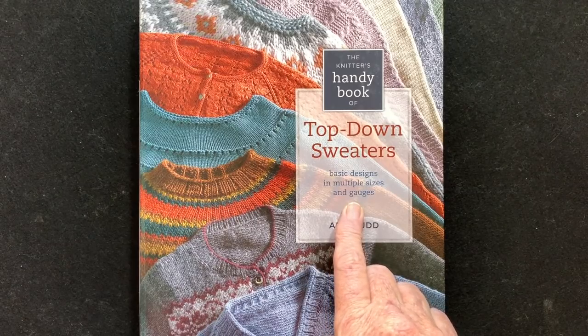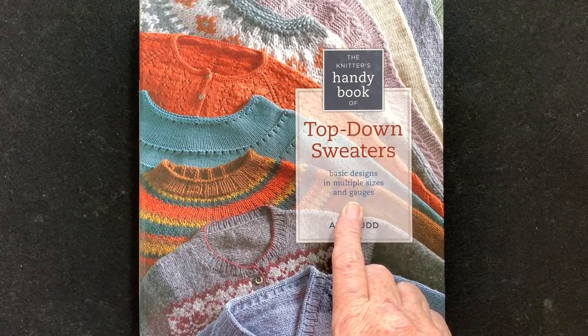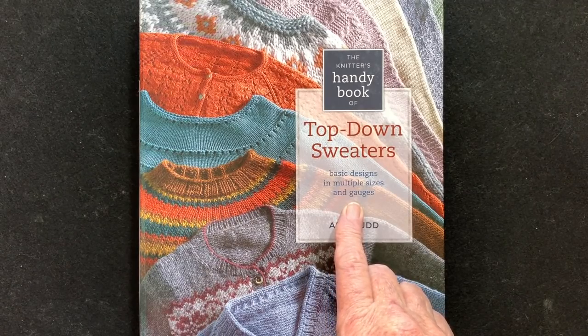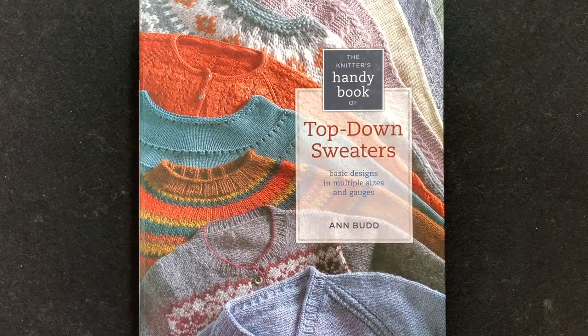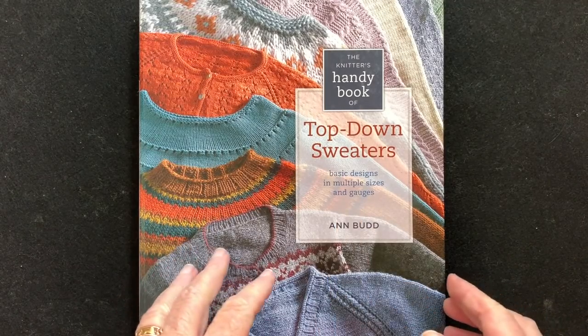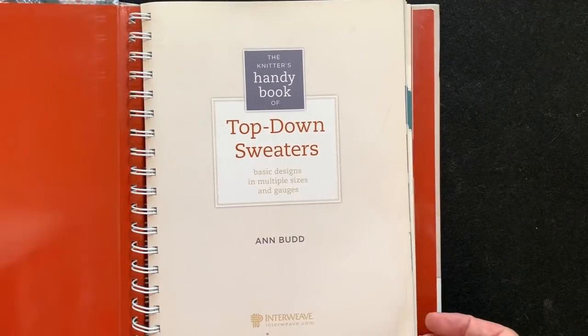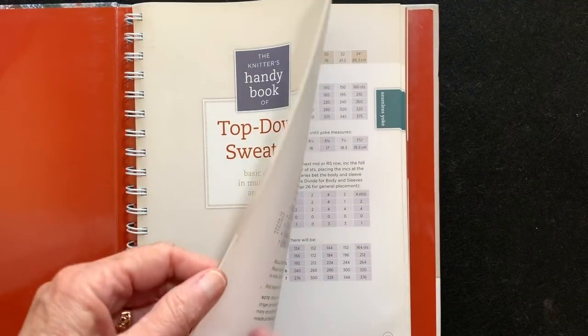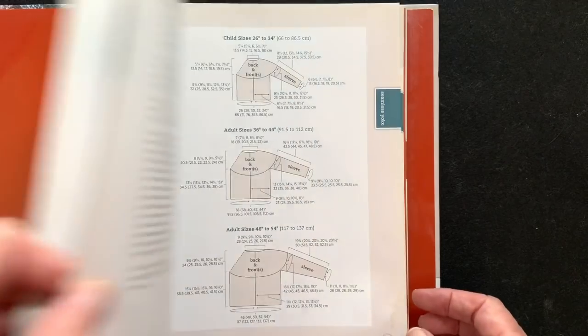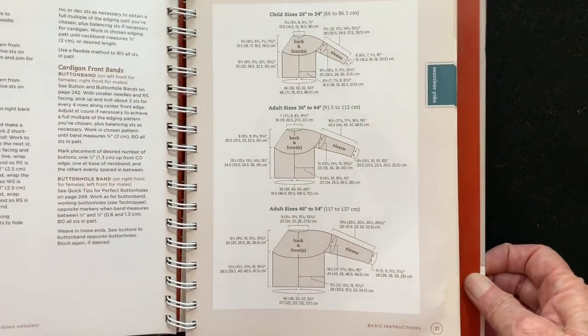We're going to be talking specifically for people who have a variation between their chest size and their arm sizes. So let's go right to the yoke section. It starts on page 31. This is a well-used book you can see. I use it all the time.